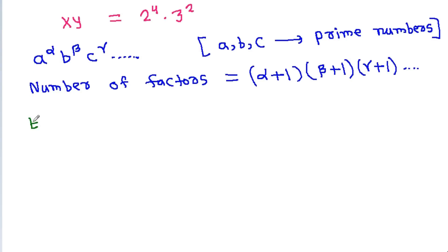For example, 12 = 2² × 3. So the number of factors is (2+1)(1+1) = 3 × 2 = 6.